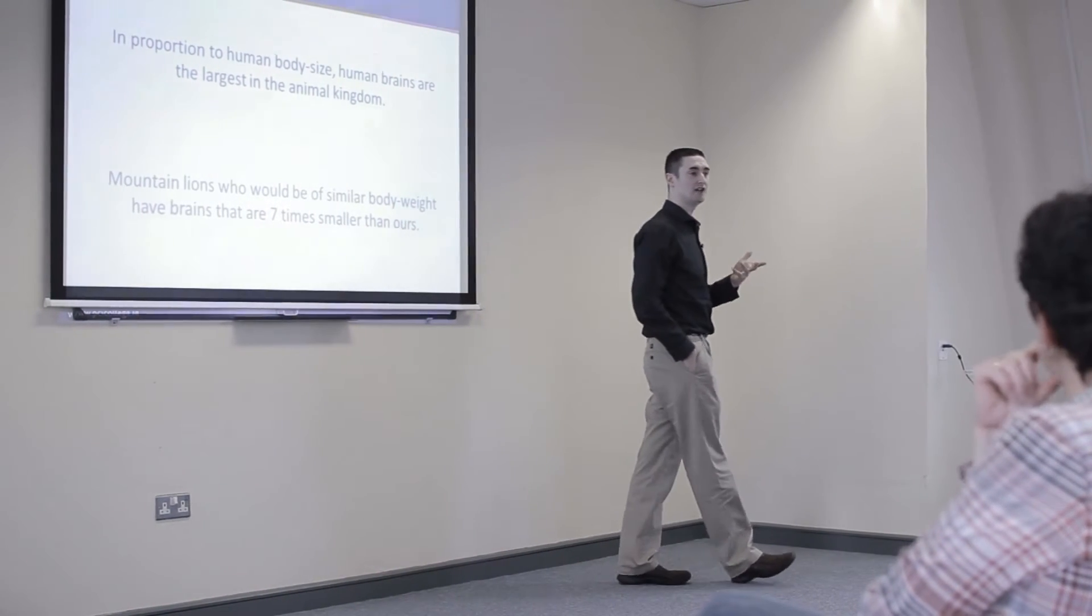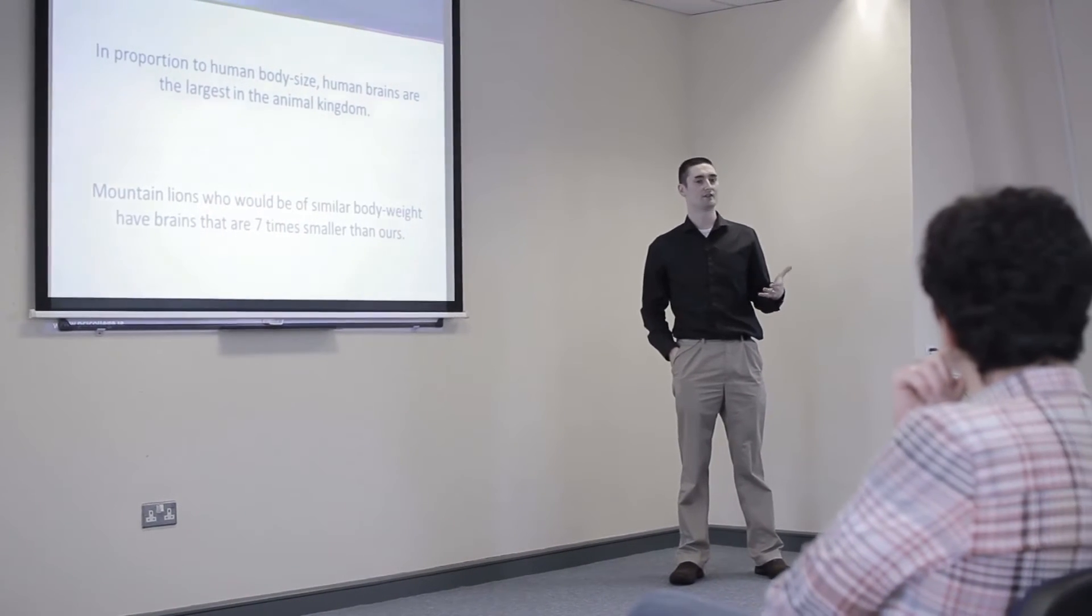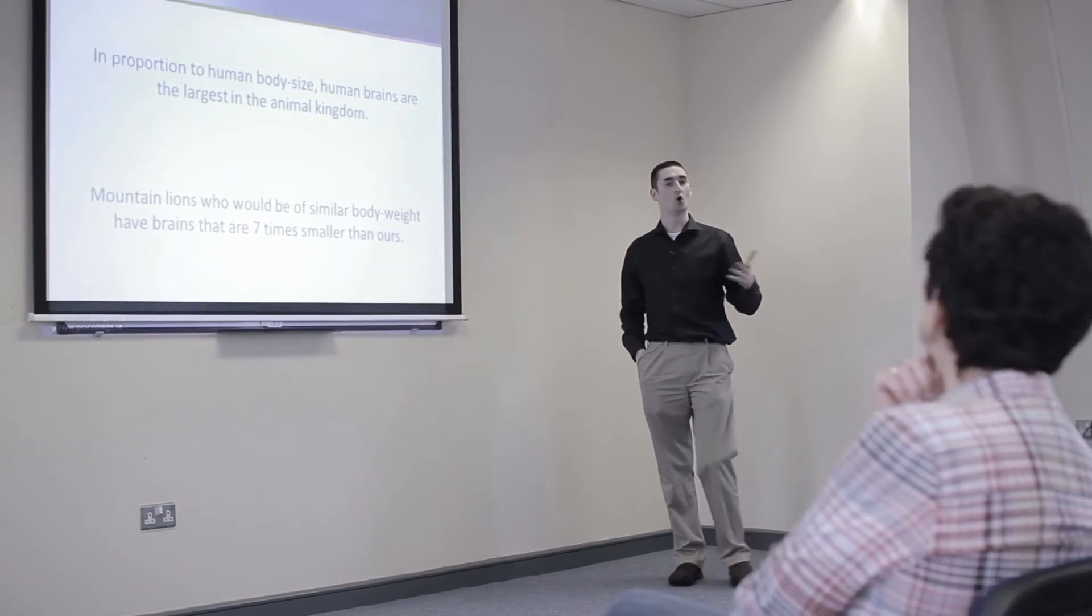So if you stood a mountain lion on its tiny legs it would roughly average out as the same height as an average human being and it would roughly be the same weight. And yet our brains are seven times larger than the brain of a mountain lion. So you can understand and appreciate how significantly differentiated the human brain is to other animal brains just by comparing it to animals of a similar weight or size. But our brains are significantly larger than primates, dolphins and whales proportionally speaking also.